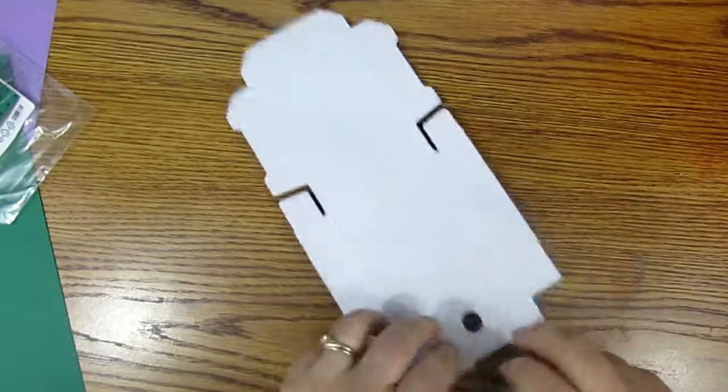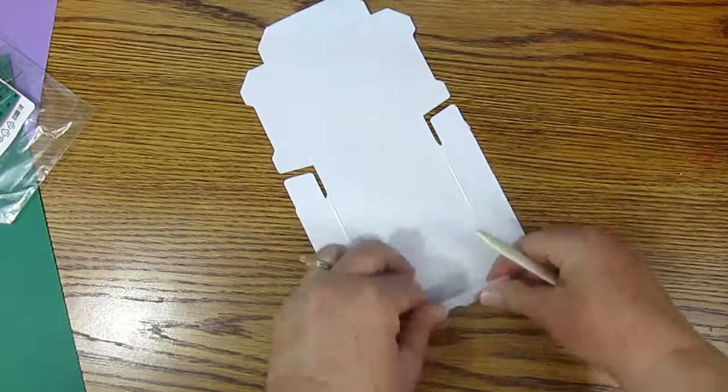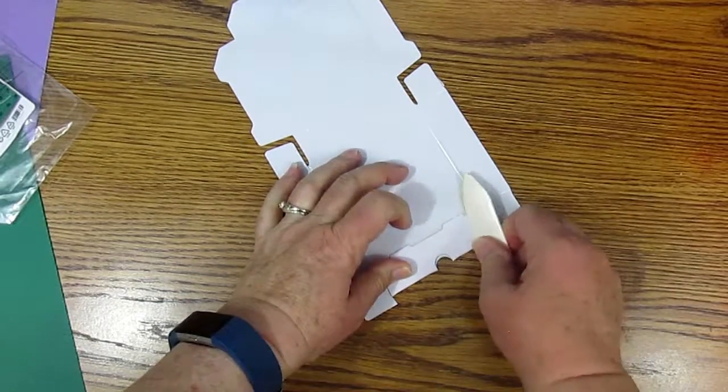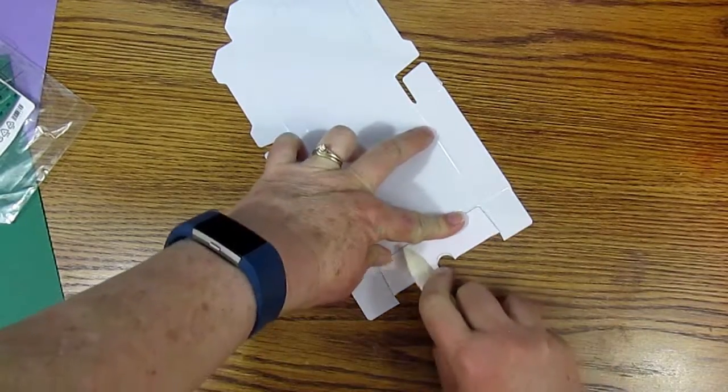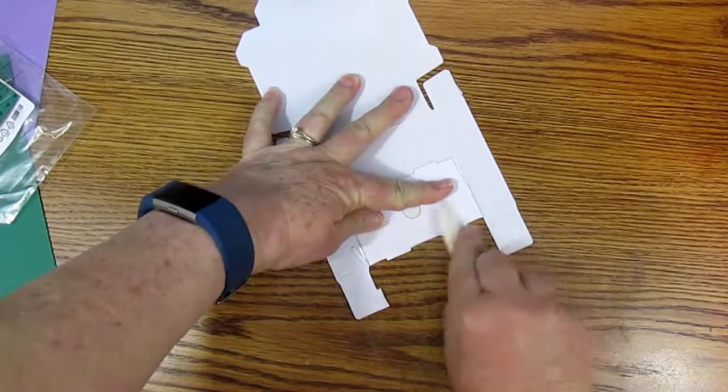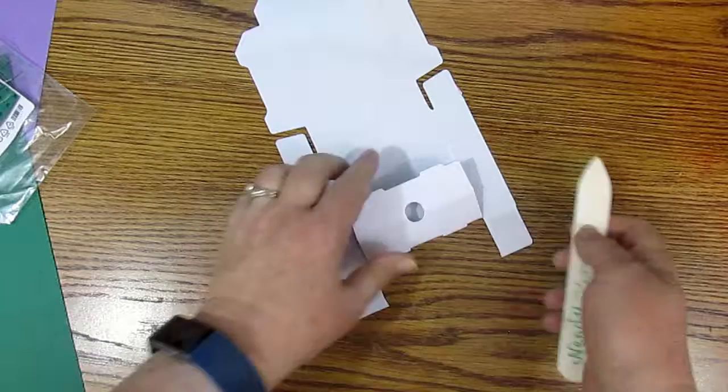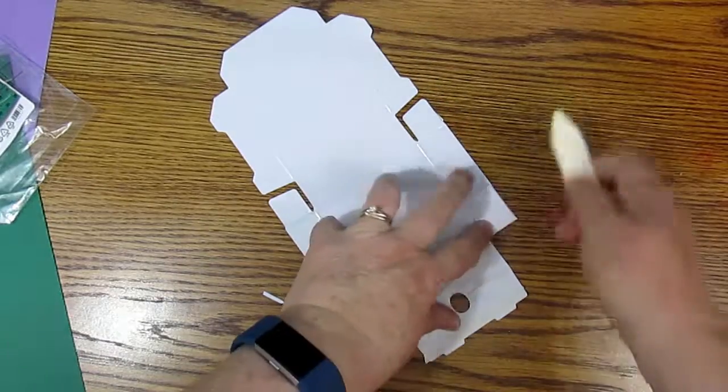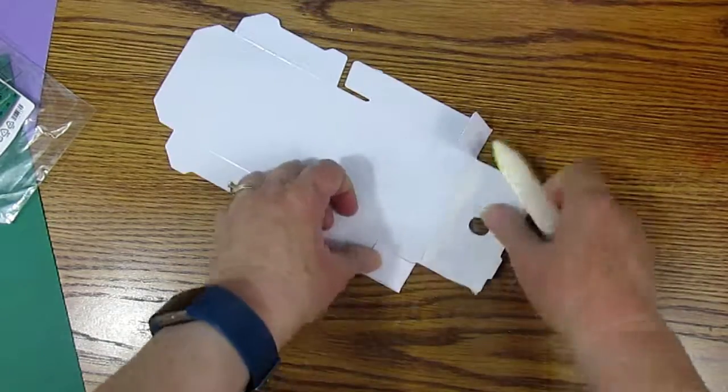Now we'll get our bone folder and fold everything. We'll crease everything. It just looks so much better if you use a bone folder to crease all the fold lines, all the score lines, I should say.